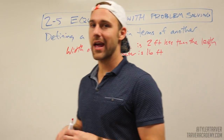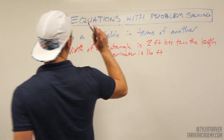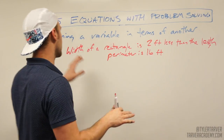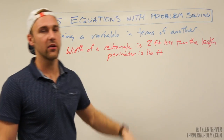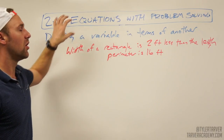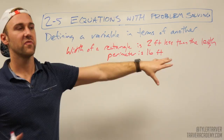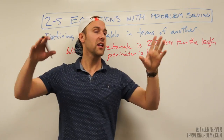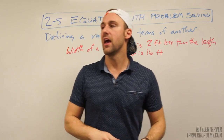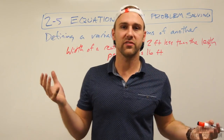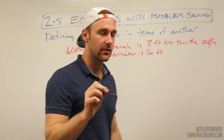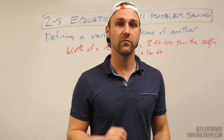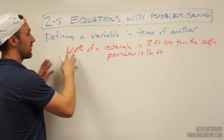What up, Tyler here, Tarver Academy. I'm going to hit you with equations and problem solving. We're going to work on solving equations, problem solving. The first thing we want to do is define a variable in terms of another. That sounds complicated but it's not — it means you're finding one variable based on the identification of something else. You see this type of problem on every ACT and every standardized test involving algebra.